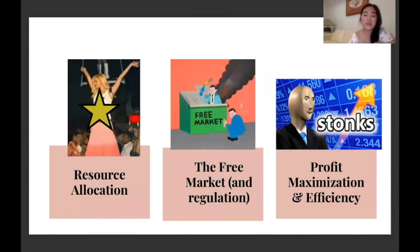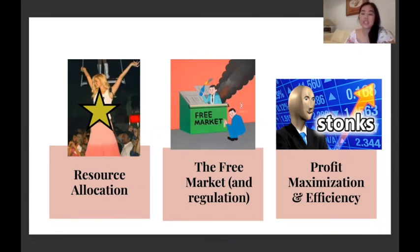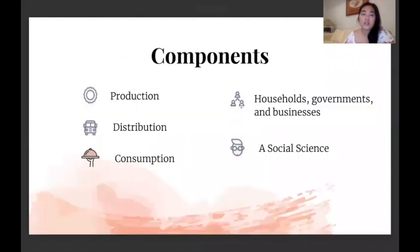Economics is primarily about things like resource allocation, the free market, and especially if we're going to talk about companies and corporate interests, about profit maximization and efficiency. The components are obviously in the production, distribution, and consumption of things. A lot of things, especially in equity regards to IR or Geopol, are naturally going to intertwine with those three components.